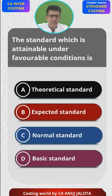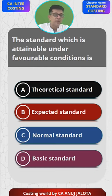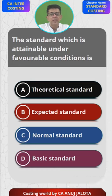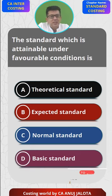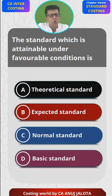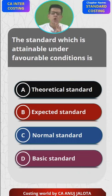Theoretical standard, also called ideal standard, is what you should achieve if conditions are exactly the best you can expect. For example, if all machines work properly with no breakdowns, we could produce say 20,000 units in one year — that's the theoretical standard. Expected standard is whatever we expect to happen. Normal standard is what the company should achieve under normal conditions — not very great, just normal, which can be good or bad.